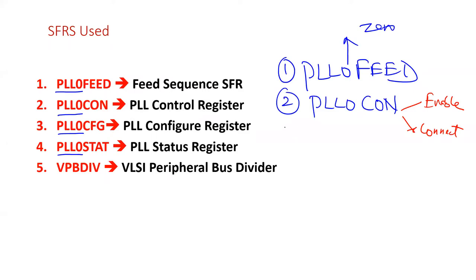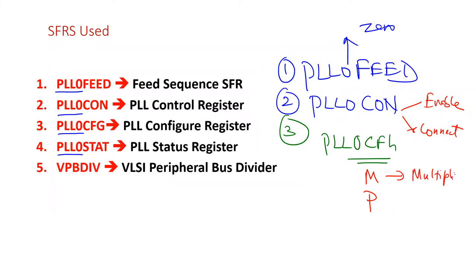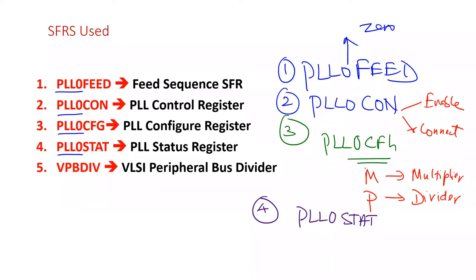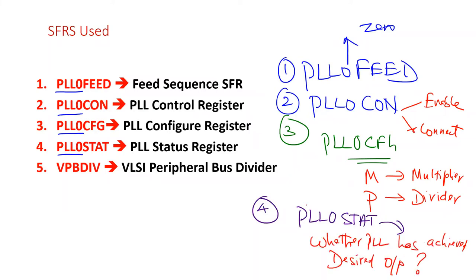The third important SFR is the PLL0CFG configure register. This register is used to set the values of M and P — the multiplier factor and divider factor. The fourth important register is the PLL0 status register, used to confirm whether the PLL has successfully achieved the desired output frequency. For example, if 60 MHz is the desired output, we must wait until the PLL achieves 60 MHz before connecting it to the system — the status register tells us when that has been achieved.